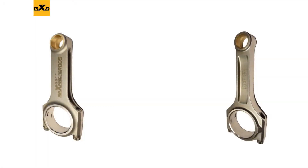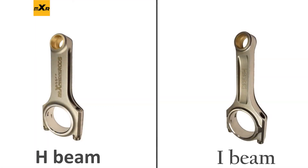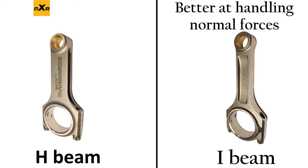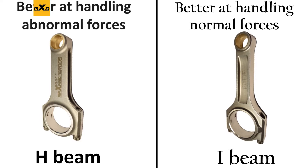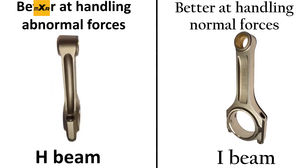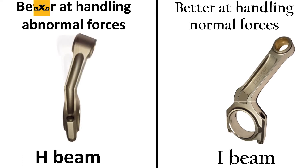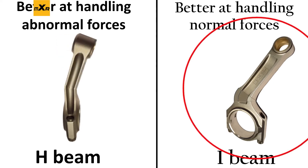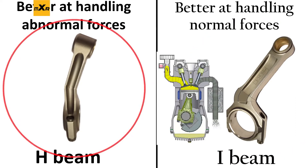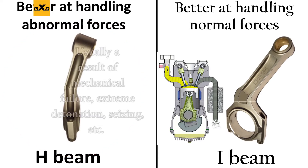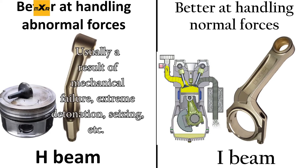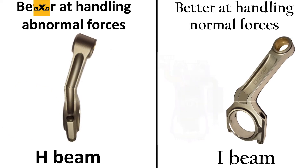Something else you might hear is that the I-beam is better at resisting normal forces while the H-beam is better at resisting abnormal forces. To oversimplify: the I-beam is better at resisting being bent in one direction while the H-beam is better at resisting being bent in a perpendicular direction. Normal bending is a consequence of forces associated with normal rotation within an engine, while abnormal bending occurs as a result of a force or load associated with twisting — something that shouldn't occur within normal engine movement dynamics.